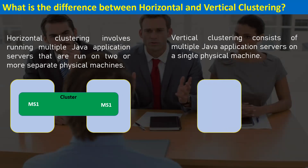Vertical clustering means everything runs on a single machine, with multiple managed servers on that one server. As a standard practice, vertical clustering is used for testing and development environments. For production or pre-production environments, horizontal clustering is preferred to achieve high availability — if one machine crashes, the other machines in the cluster are still available to serve client requests.